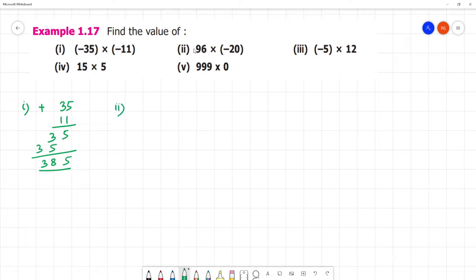Second one. This one is plus and minus, so this is minus. The first answer is 385, that is plus 385. This is minus. Minus 96 into 20, that is minus 96 into 2.